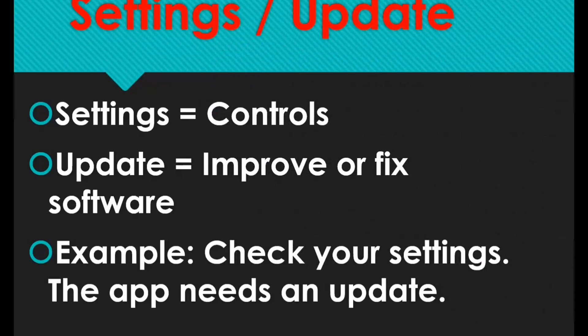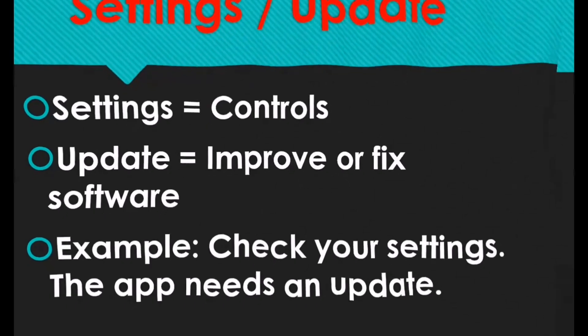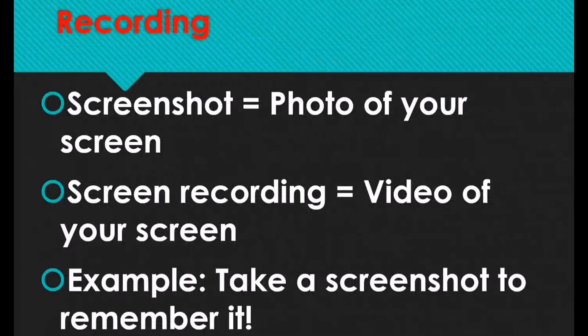The next one is settings and update. Settings means controls, while update means to improve or fix software. For example, check your settings — the app needs an update. It is always important for you to check your settings to see if your app needs an update, because if it does and you don't update, your computer or phone may malfunction.